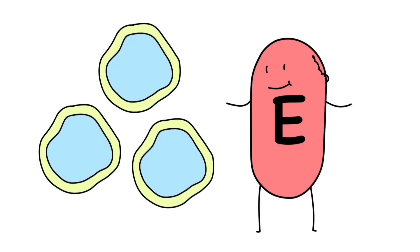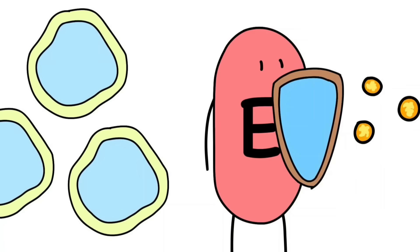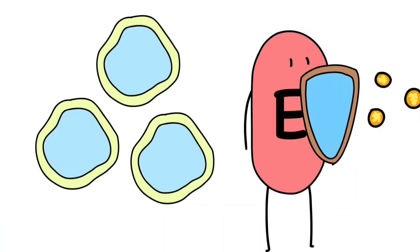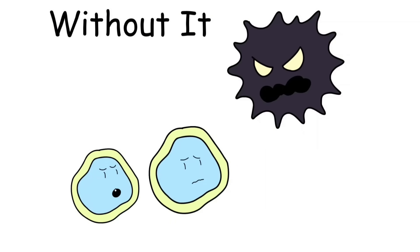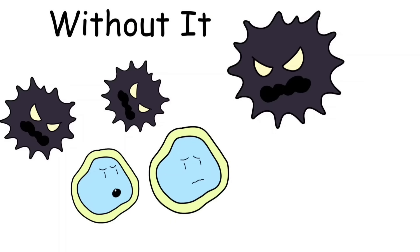Vitamin E is the quiet bodyguard of your cells. It's a powerful antioxidant, which means it protects your cell membranes from damage, like rust-proofing for your body. Without it, your cells would be under constant attack from free radicals, the unstable molecules that speed up aging and disease.